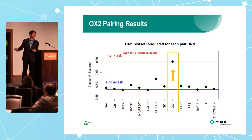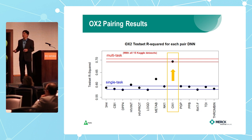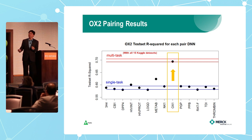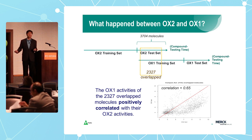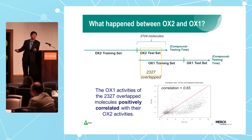We paired OIS2 with each other dataset — such as 3A4, CB1 — and predicted OIS2. We found that if we pair with almost any of the other 13, you get roughly the same result as the single network. But when we pair OIS2 with OIS1, one specific dataset, you reach the best result. Going back to the data, we asked scientists how they generated the datasets. OIS2 was a program developed at Merck, and the training/test split was done by timeline — newer compounds were the test set. Then they started OIS1, a related program.